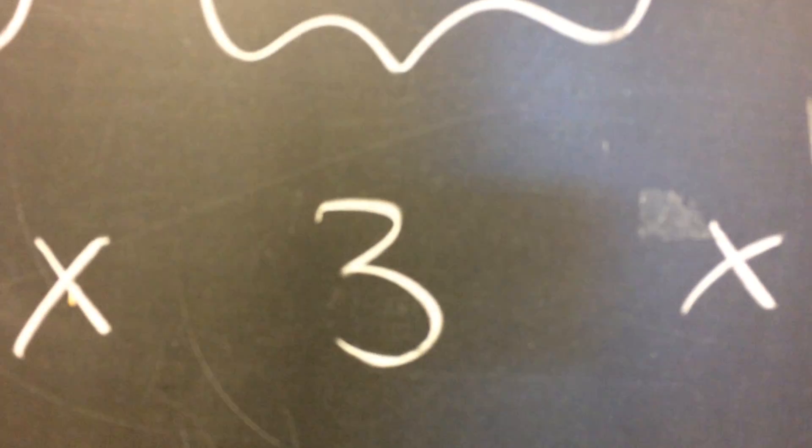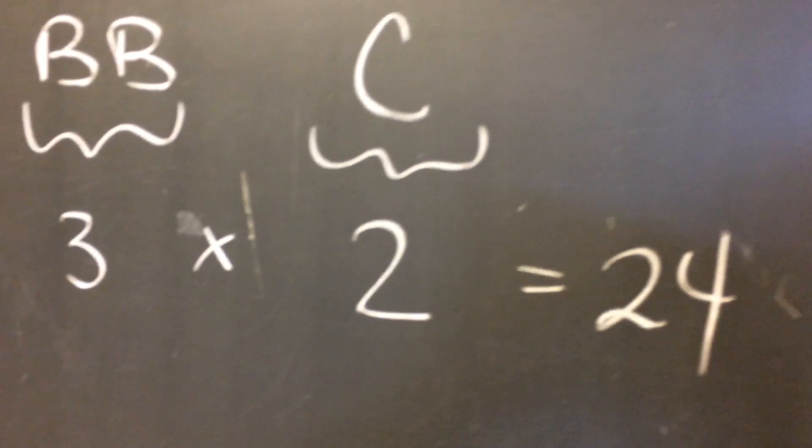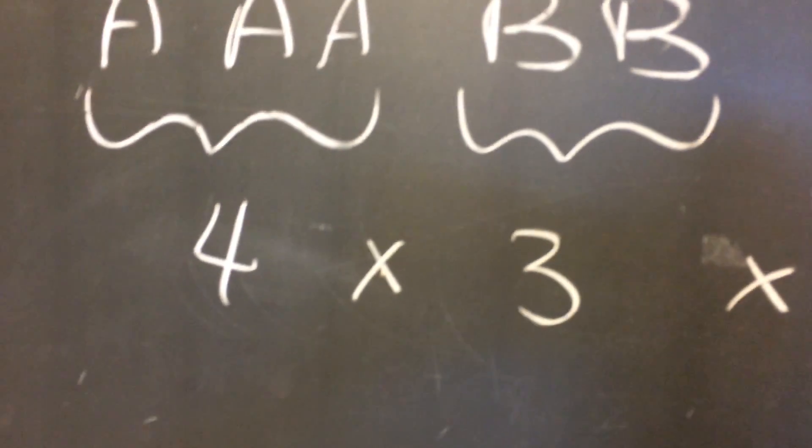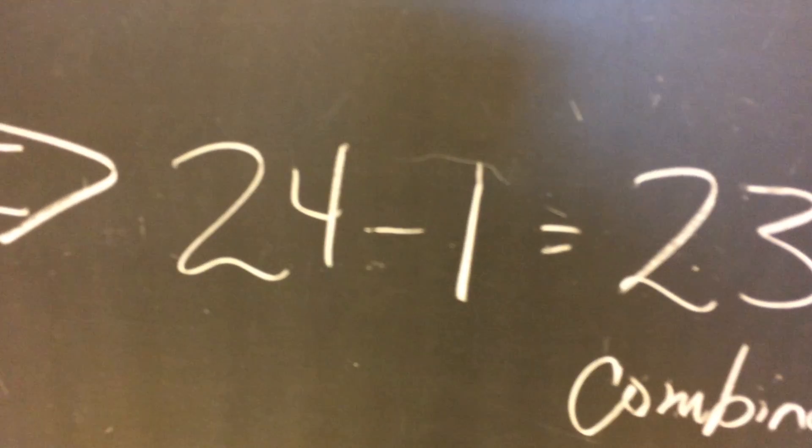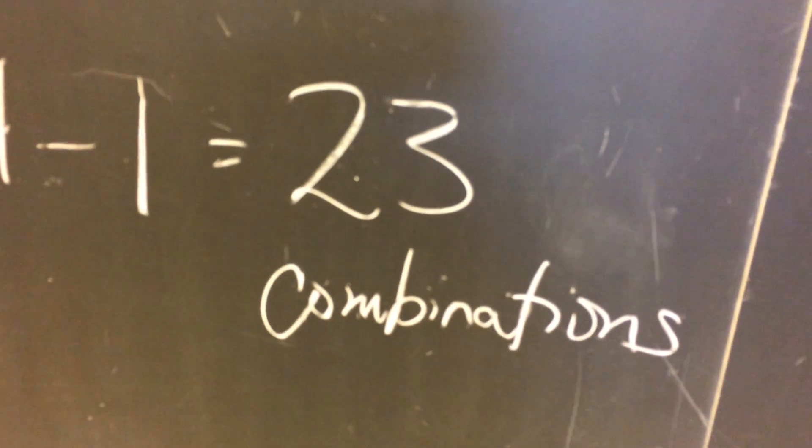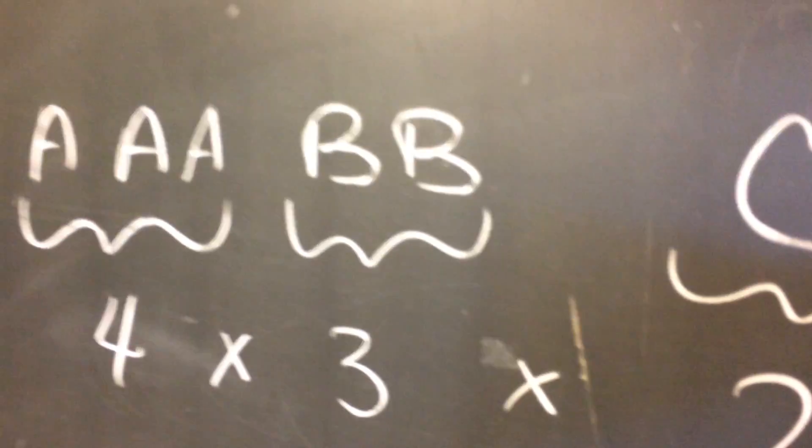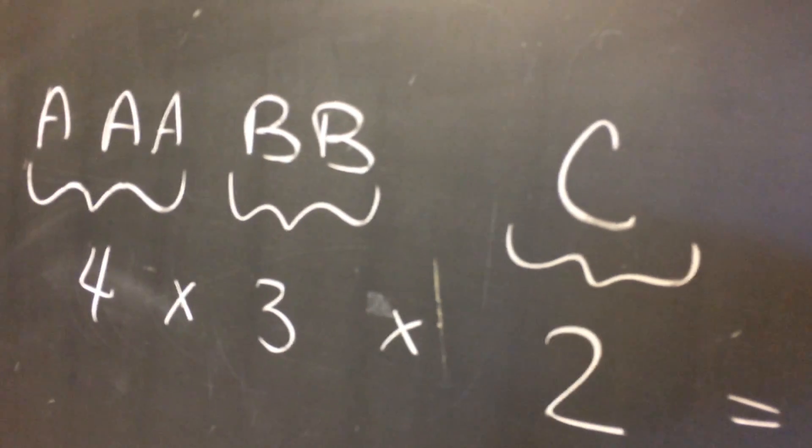The B's would be three choices, and the C's, I have only one C. I can pick it or not pick it. That's two choices. Multiplying those together, I get 24. But that includes that zero choice, where I picked no A's, no B's, no C's. And so if I subtract that, I have 23 different combinations of letters that I can choose from that list of three A's, two B's, and one C.